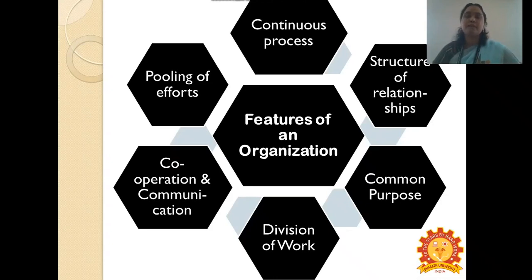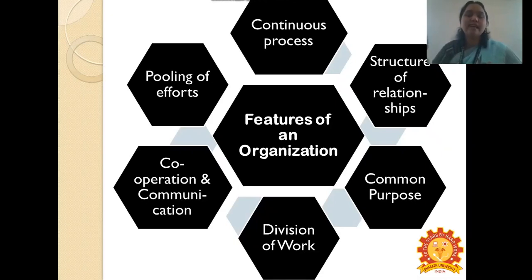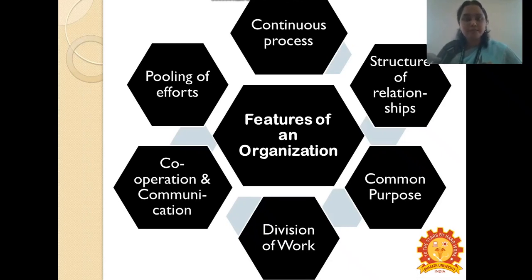There may be a top level management, a middle level management, and a lower level management, with different structures prevailing in an organization. The third point is common purpose. Many people come together and start their work in a workplace with one common goal laid down by the top management. They all work for a common purpose, which is to achieve the organizational objectives. The next feature is division of work. Members who come together are given separate tasks by their managers, with each one having specific tasks and responsibilities to be carried out.